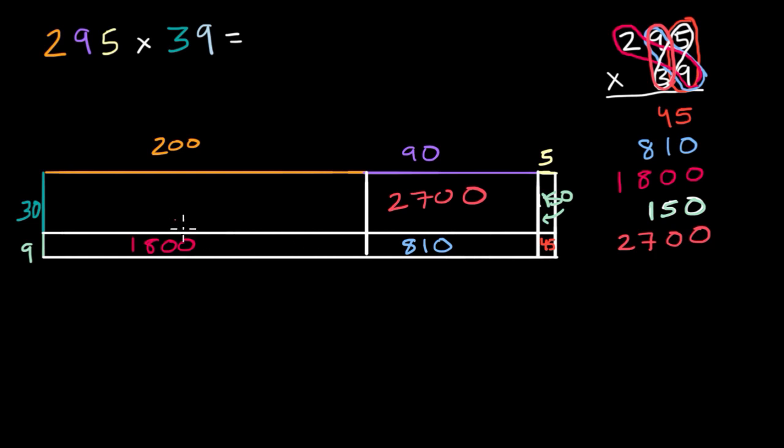And then last but not least, and that's one of the reasons this area model is useful, I can make sure I'm getting all of the combinations. I want to figure out what 30 times 200 is. If I had three times two, that is six. 30 times two is 60. 30 times 20 is 600. 30 times 200 is 6000. So this right over here is 6000.